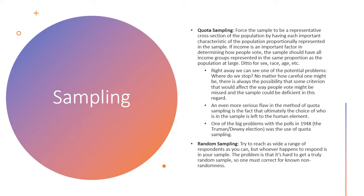Quota sampling is an idea that tends to make a lot of sense to people — it sounds like a great idea. A lot of people assume that pollsters do a lot of quota sampling when in fact they don't really. Here's how it works: you force the sample to be representative by having each important characteristic of the population proportionally represented in the sample. We know a representative sample is a good one, and when samples aren't representative, that's where certain kinds of biases creep in.